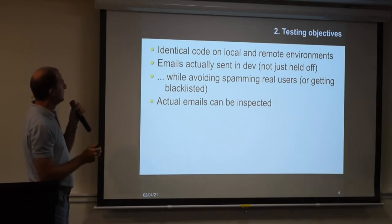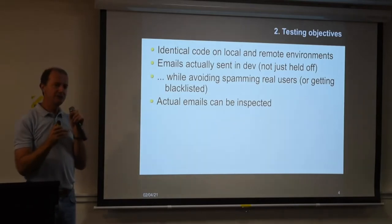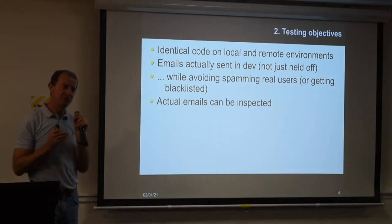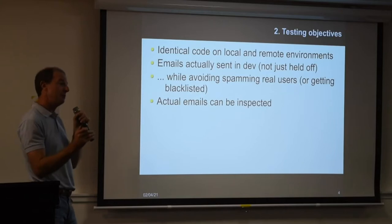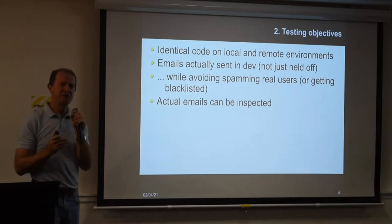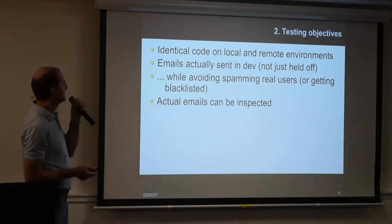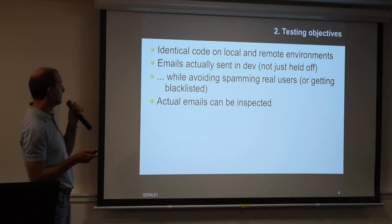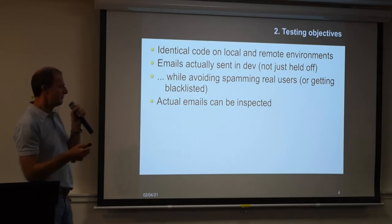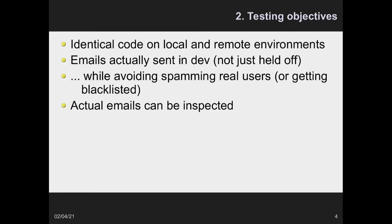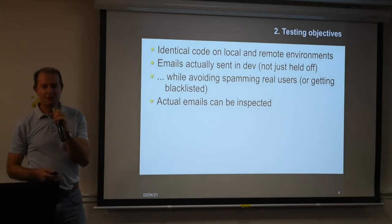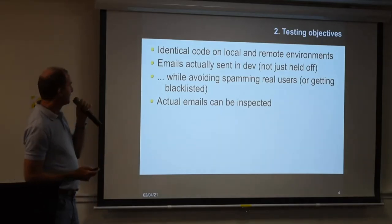Now, how do we test this? A few important architectural constraints: you want exactly the same code running in your test environment and in production — the difference should only be a matter of environment configuration. You want emails to actually be sent, not just suppressed, so you can inspect them. And you want to avoid sending them over the network, for fear of being blacklisted or accidentally spamming real users.